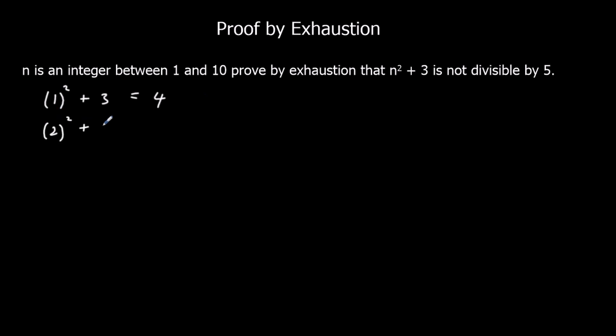2 squared plus 3 is 7, which again isn't. 3 squared plus 3 is 12.